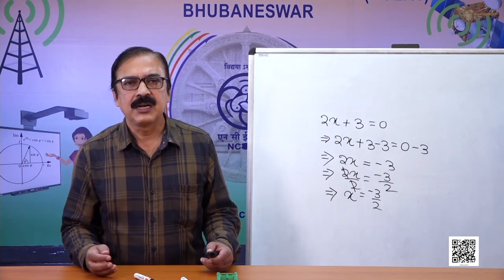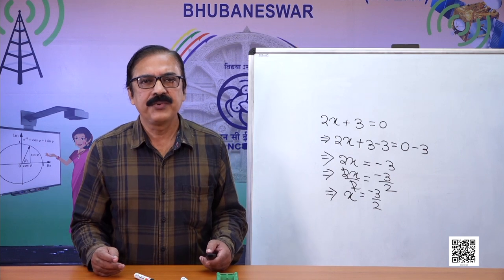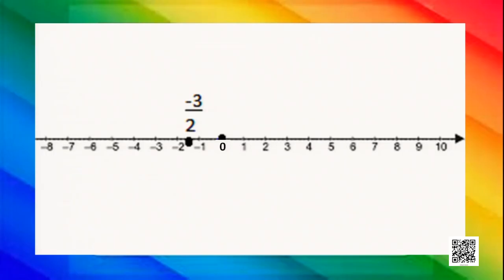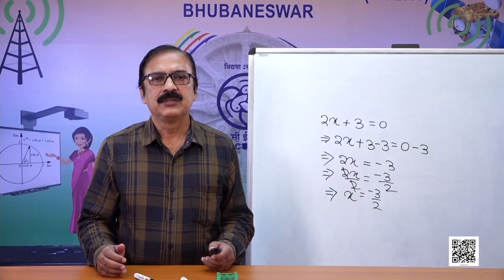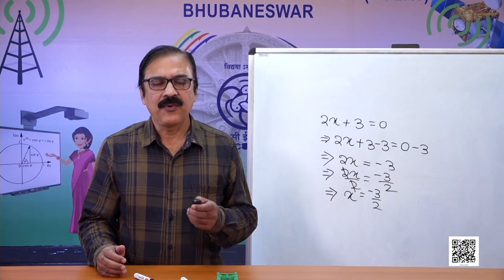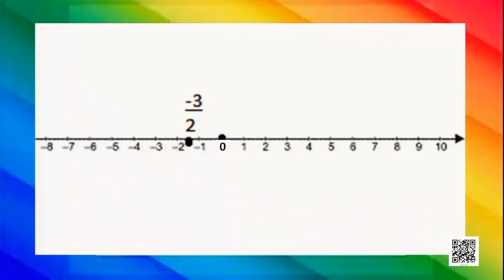How to represent it graphically? Graphically, we can represent it on a number line. As you know, minus 3 by 2 is greater than minus 2 and smaller than minus 1, so it lies somewhere between minus 2 and minus 1. The value of minus 3 by 2 is represented on the number line where 0 is said to be the origin, with all positive numbers to its right and all negative numbers to its left.